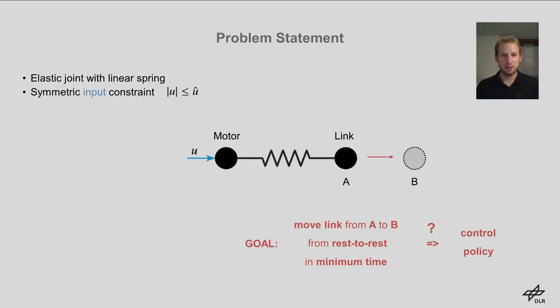For many robotic applications, achieving fast motions between two points is crucial. It requires the exploitation of the maximum allowable actuator torques. In this work, we present the closed-form solution to the following time-optimal control problem. Given an elastic joint with a linear spring that connects the motor and link inertia,